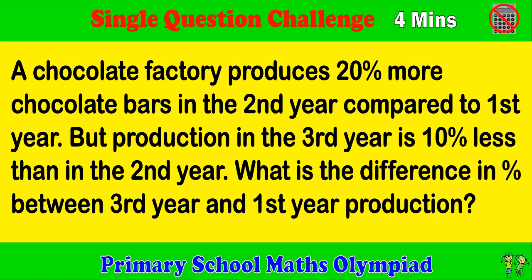The chocolate factory produces 20% more chocolate bars in the second year compared to the first year. But production in the third year is 10% less than in the second year. What is the difference in percent between third year and first year production?